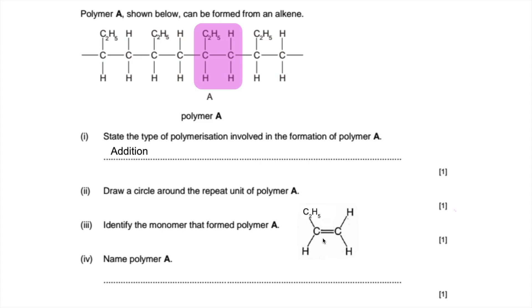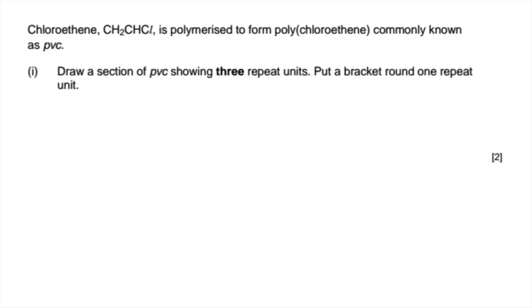To name polymer A, we need to know what the monomer's called. This here is bute-1-ene, so it's obviously poly(bute-1-ene). The other exam question I've got is this one here. We've got to draw a section of PVC showing three repeat units, putting a bracket around one of the repeats. There's the monomer chloroethene, so turn that into the ethene structure and we need to draw three of these joined together.